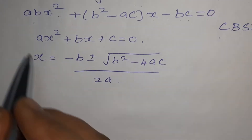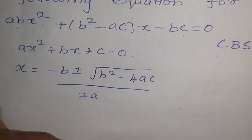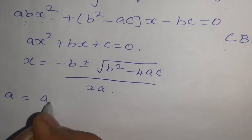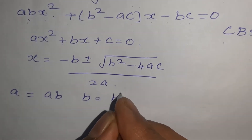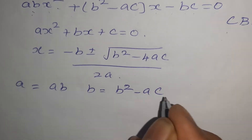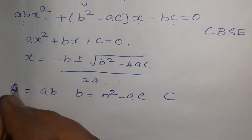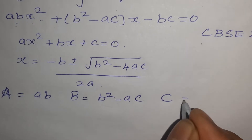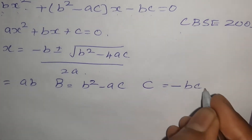So here, in the place of A you have AB, in the place of B you have (B² − AC), and C is −BC. We can take these as capital A, capital B, and capital C.